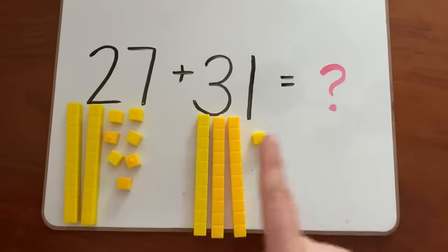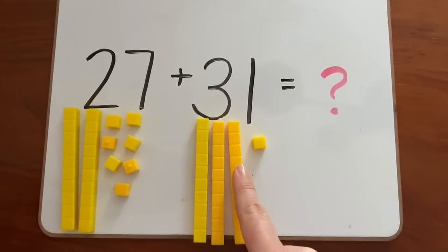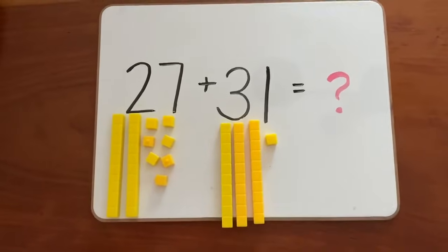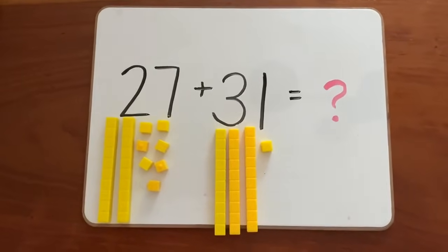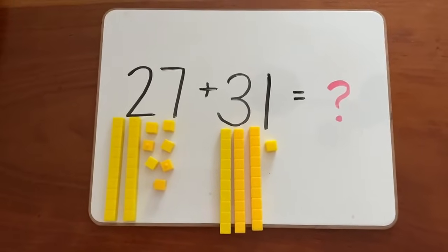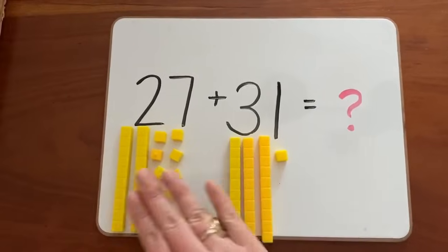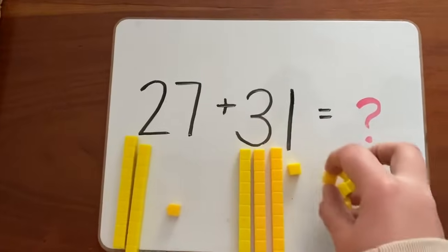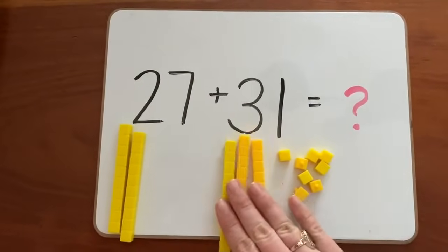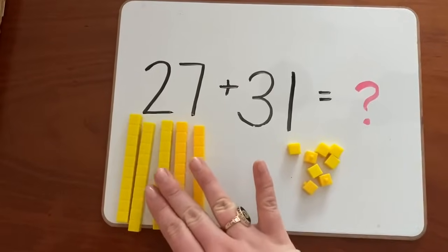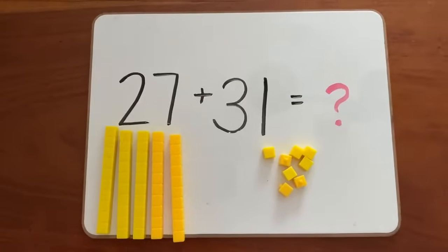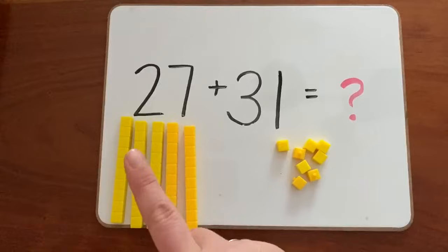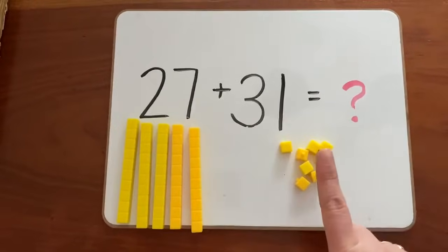Let's double check: 10, 20, 30, 31. Now that we have both numbers made with our longs and cubes, we are ready to add. What I'm going to do to make this easier is combine the longs and combine the cubes. Remember, when we count our longs and cubes, we start with the longs, count those by 10, and then when we get to the cubes, we start counting up by 1.